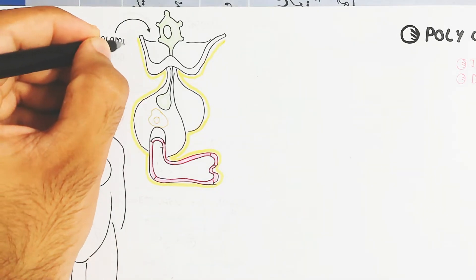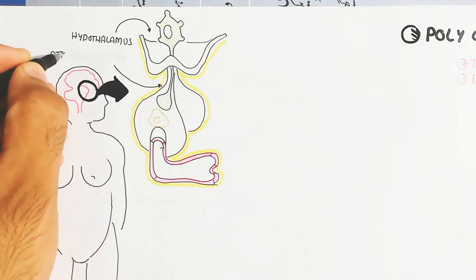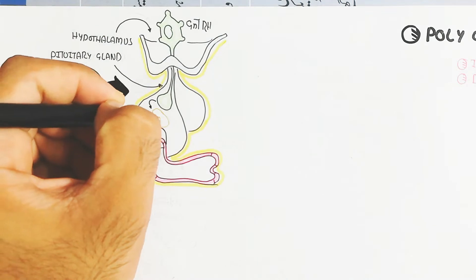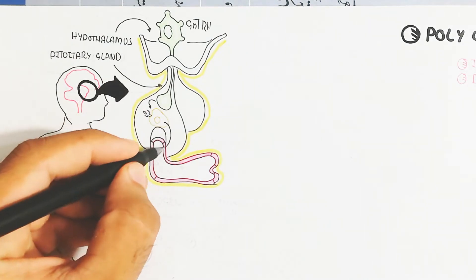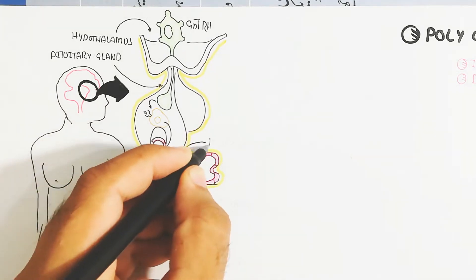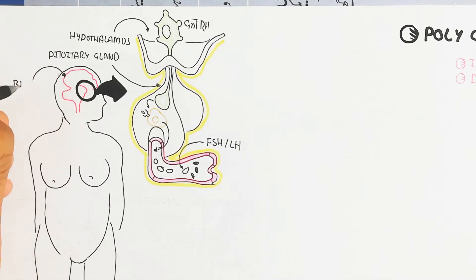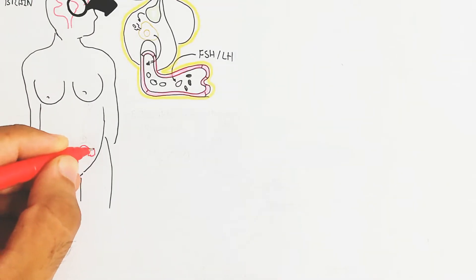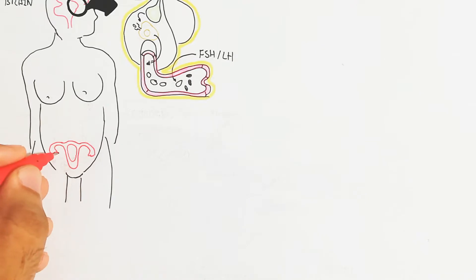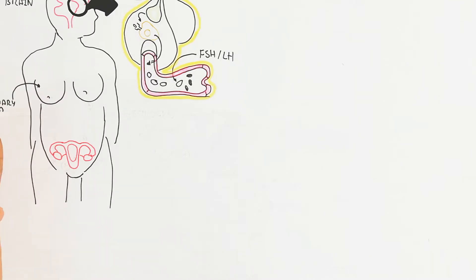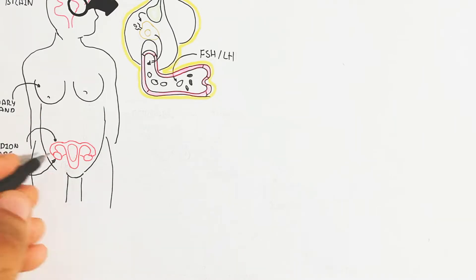First, let's understand the production of eggs and their function. The hypothalamus and pituitary gland are key. The hypothalamus releases gonadotropin-releasing hormone (GnRH) through neurosecretory cells, which bind with the adenohypophysis of the pituitary gland. After binding, it releases follicle-stimulating hormone (FSH) and luteinizing hormone (LH). The female reproductive system contains the ovary, follicle, fallopian tube, vagina, uterus, and cervix.